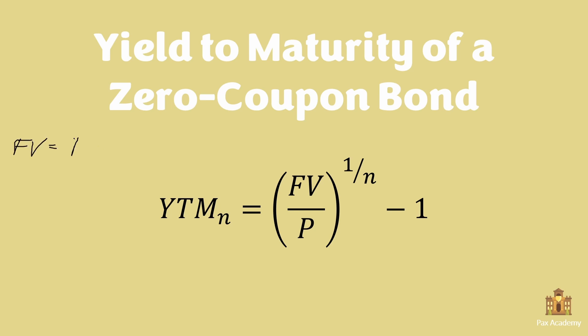FV is the face value of the bond. P is the current market price of the bond, and n is the amount of periods the bond lasts for. YTM is the yield to maturity.